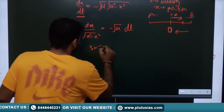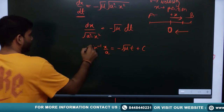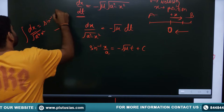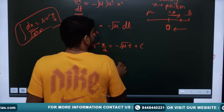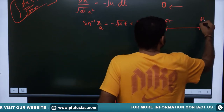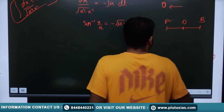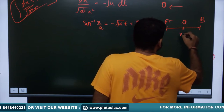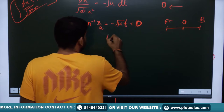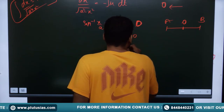Integrating dx/√(a² − x²) = −√ν dt, and using the standard integration ∫dx/√(a² − x²) = sin⁻¹(x/a), we get sin⁻¹(x/a) = −√ν · t + d, where d is the constant of integration. To eliminate this constant, we apply the initial condition: at t = 0, by convention, the particle is at one of the extreme points.